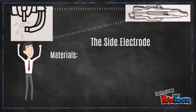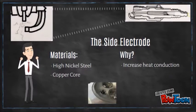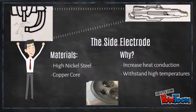The side electrode is made from high nickel steel, sometimes with a copper core. This is to increase heat conduction. As this part of the spark plug is located inside the combustion chamber, it has to be able to withstand high temperatures.